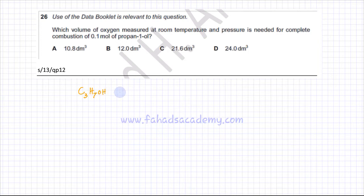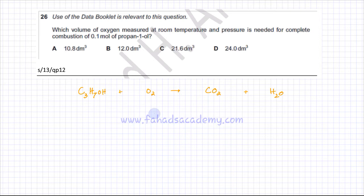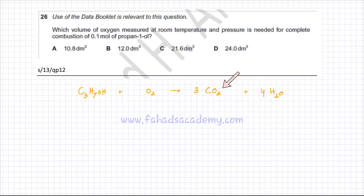It reacts with oxygen O2 and will produce two things: carbon dioxide and H2O water. We need to balance this equation, so there would be three carbon dioxide molecules. There are eight hydrogens on the left-hand side, so four water molecules. Now we need to count the number of oxygen atoms — on the right-hand side you have six oxygen here and four oxygen in four H2Os.